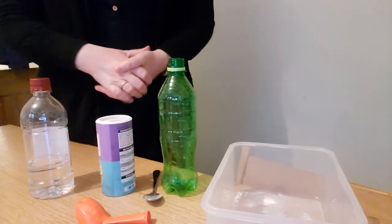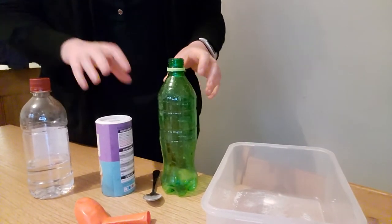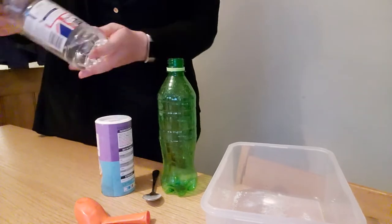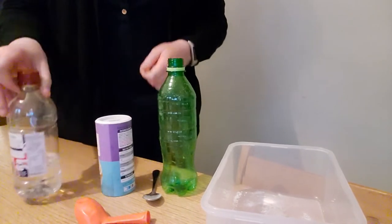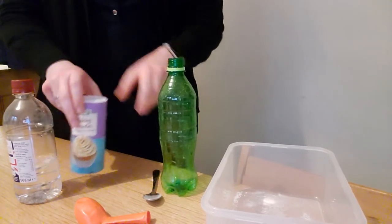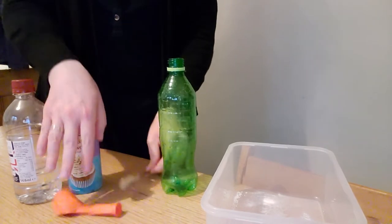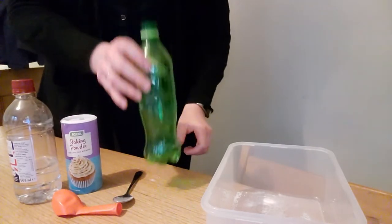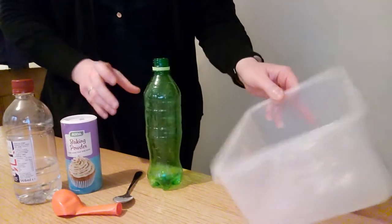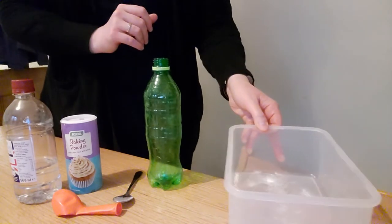Today we're going to be looking at an at-home neutralization practical using these items. I've got some vinegar, some baking powder, a balloon, a spoon, a clean bottle, and a container that we can place it in.